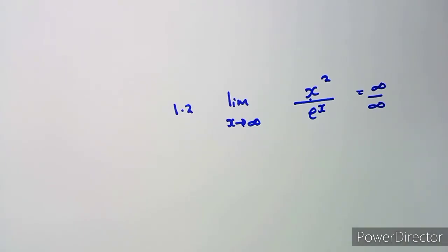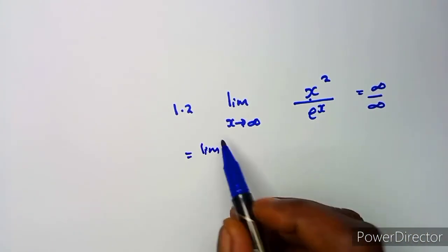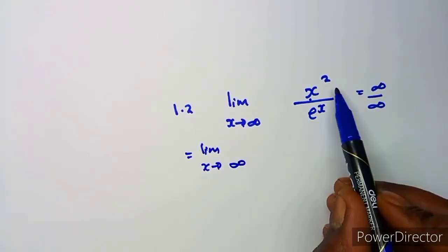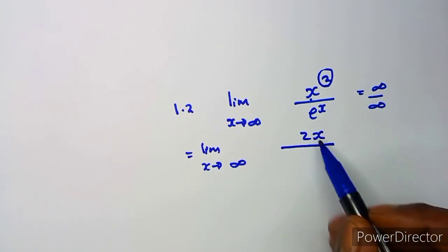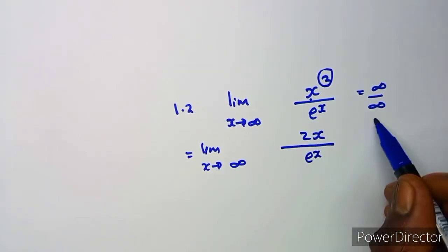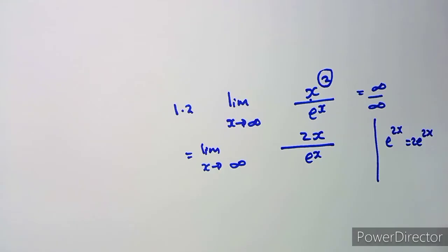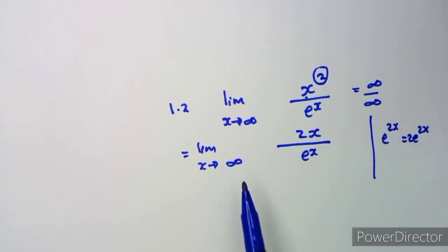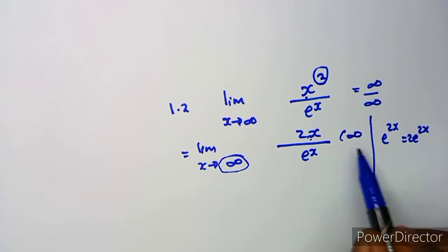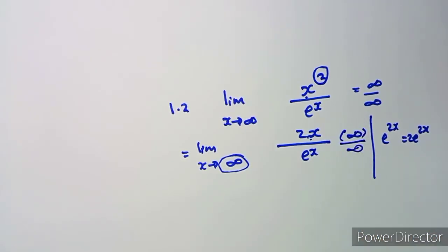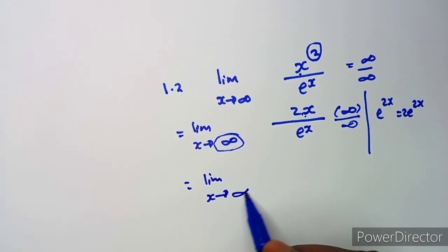Since we have infinity over infinity, we apply L'Hôpital's rule. The derivative of x² is 2x, over the derivative of e^x, which remains e^x. As x approaches infinity, this is still infinity over infinity, so we must apply L'Hôpital's rule again.